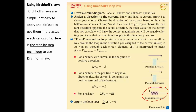The rules are: if your chosen loop goes from negative to positive terminal of the battery, the electric potential increases, so the battery voltage is positive. Conversely, if you go from positive to negative terminal, you are stepping down from higher to lower potential, so the battery voltage is negative in that case.